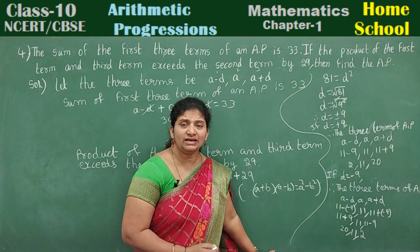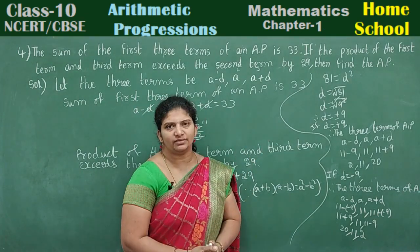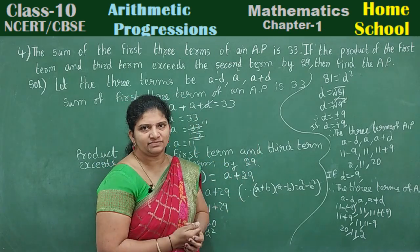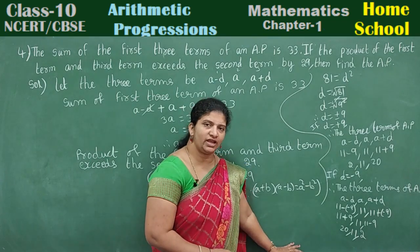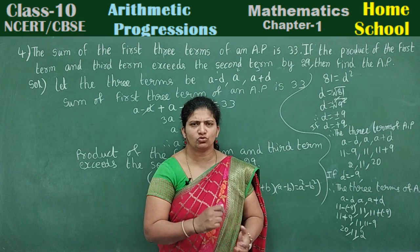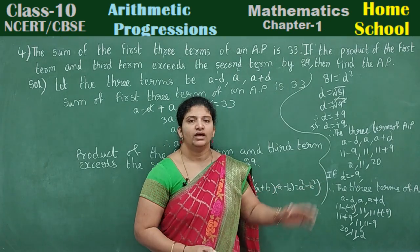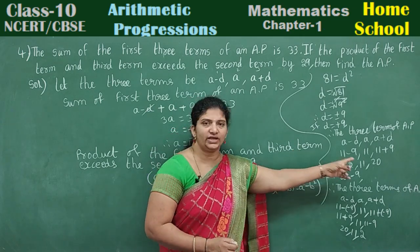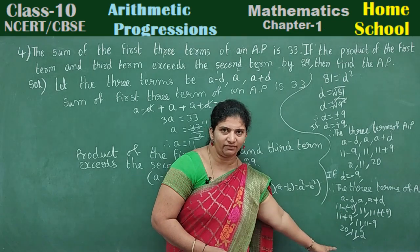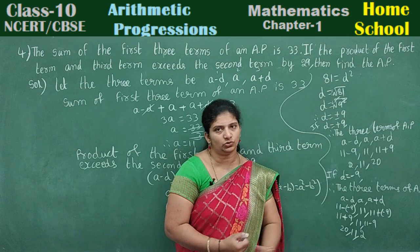They asked for the AP. We found only three terms — I took the middle three terms. Therefore the required AP is 2, 11, 20, and so on. You may extend with many more terms on either side. Make sure if you find three terms, their reverse order will be the answer for the other D value. So here we got 2, 11, 20 and here we got 20, 11, 2.